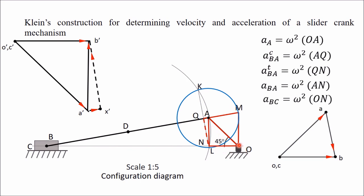OA is rotating in the clockwise direction, giving one velocity diagram and one acceleration diagram. If OA rotates anticlockwise, the separate diagrams change, but in Klein's construction the diagram remains the same — OAM remains the same irrespective of the direction of rotation. Similarly, for the acceleration diagram, irrespective of whether OA rotates clockwise or anticlockwise, you always get the same ONQA diagram.